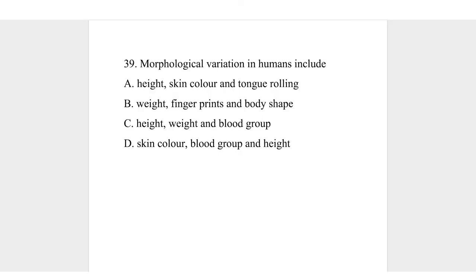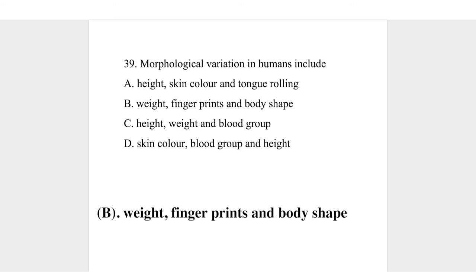Question 39. Morphological variation in humans includes: A, height, skin color, and tongue rolling; B, weight, fingerprints, and body shape; C, height, weight, and blood group; D, skin color, blood group, and height. Morphological variation includes everything to do with physical appearance — patterns, color, size. Height and skin color are morphological, but tongue rolling is not. For option B — weight, fingerprints, and body shape — all are morphological. Blood group in options C and D is not a morphological variation. The correct answer is B, weight, fingerprints, and body shape.